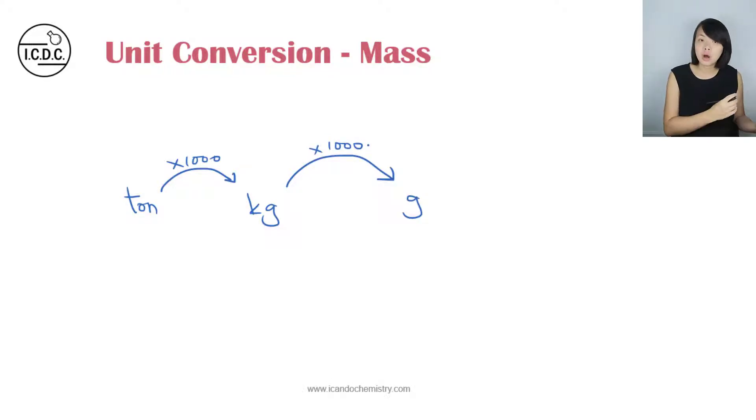So if we are to convert directly from tons to grams, we will just need to multiply thousand-thousand, which is multiply a million. What about the other way around? We have the mass in grams, and what if we need to convert it into another units?